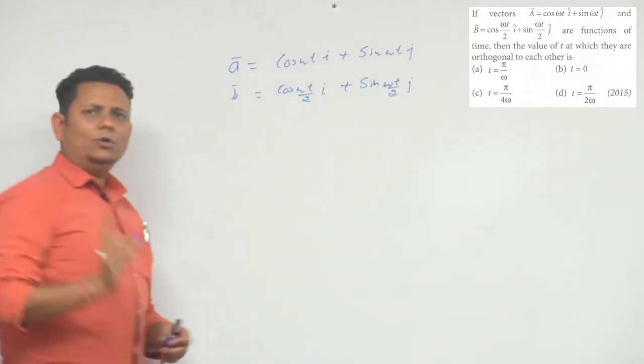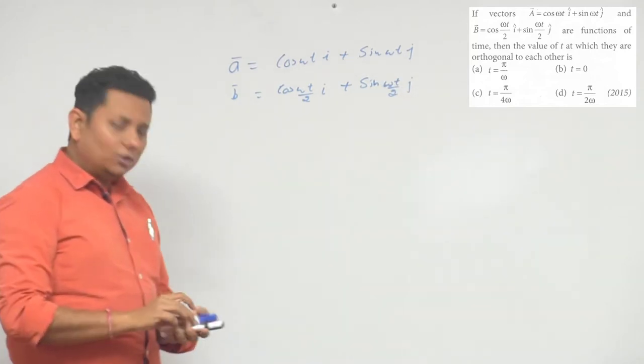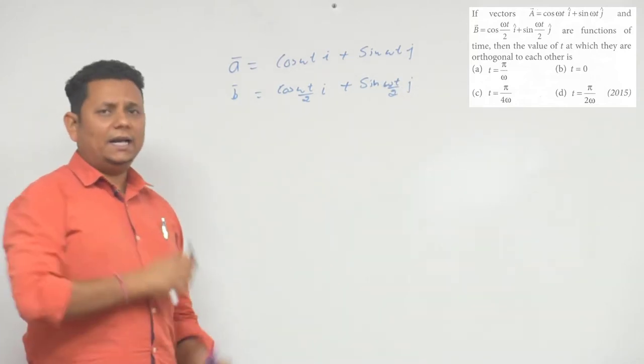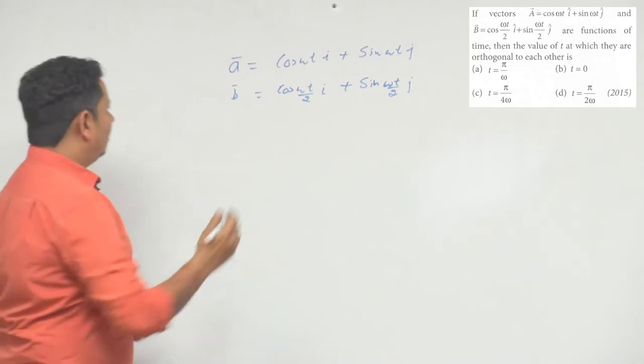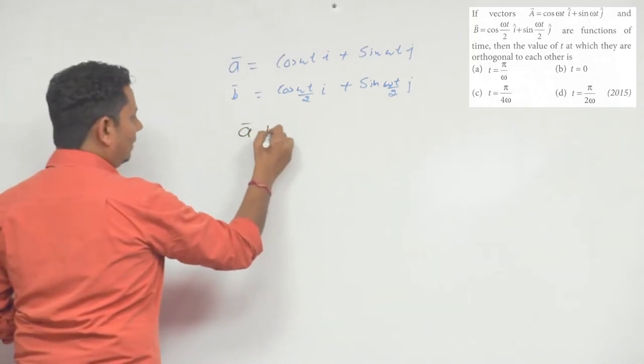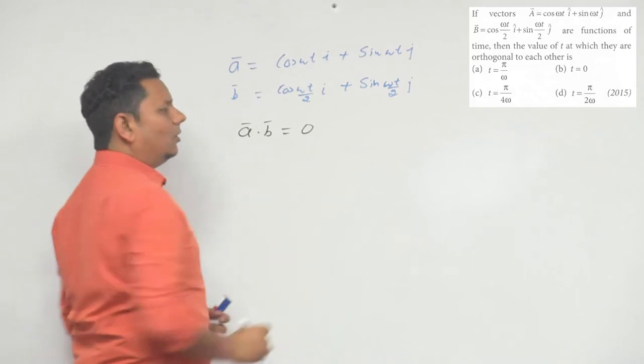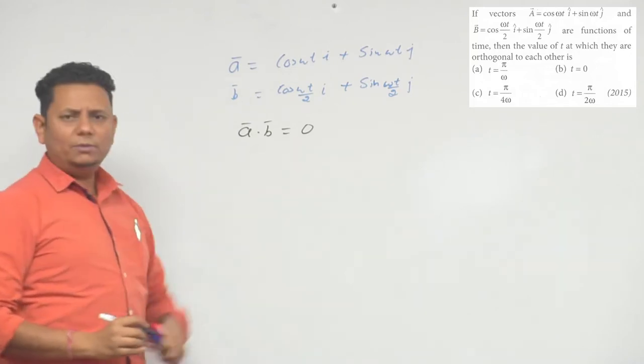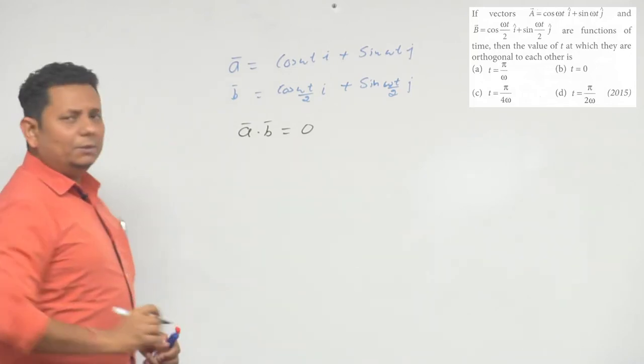और हमें बताना है वो time की value जिसके लिए दोनों vector orthogonal हो यानि कि दोनों के बीच का angle 90 degree हो. Now, we know जब भी दो vector orthogonal होएंगे या 90 degree का angle होएगा तो उनका dot product 0 होएगा यानि कि a dot b will be equal to 0.